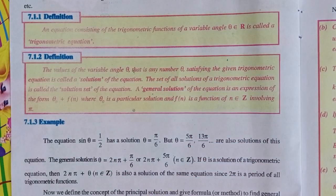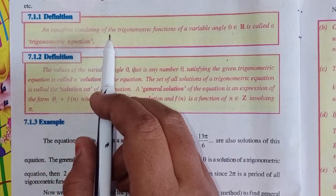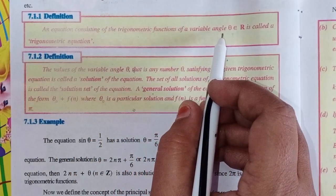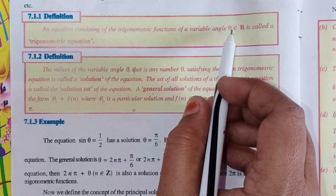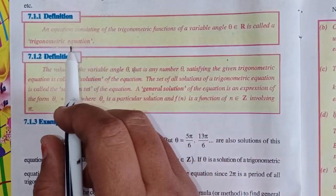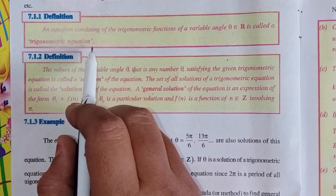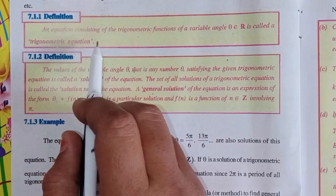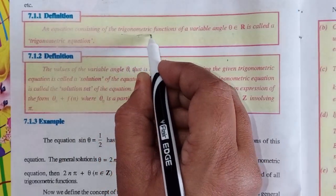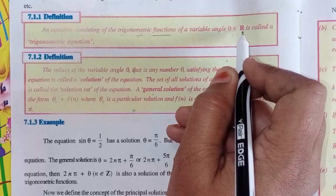An equation consisting of the trigonometric functions of a variable angle theta, where theta belongs to ℝ — that type of equation is called a trigonometric equation.